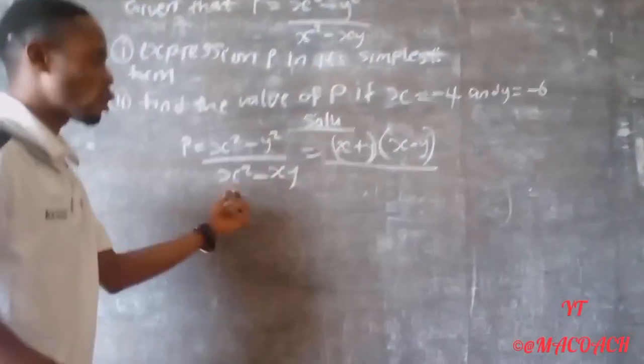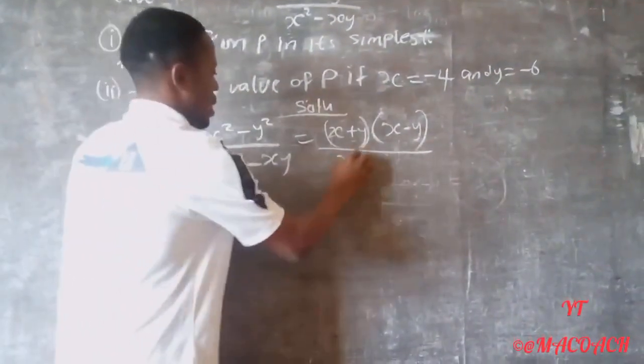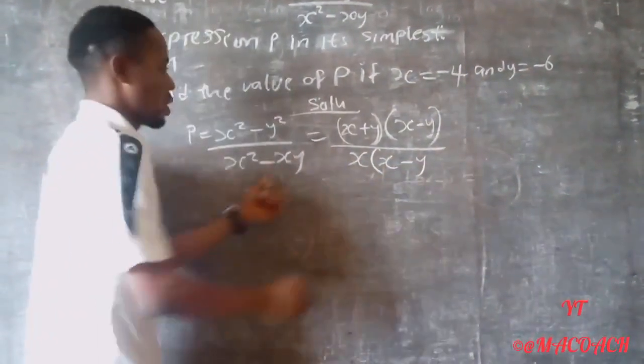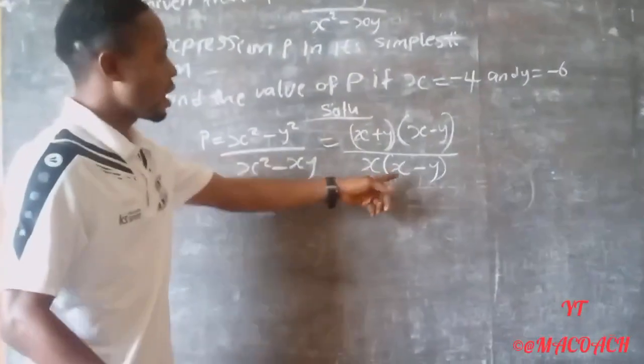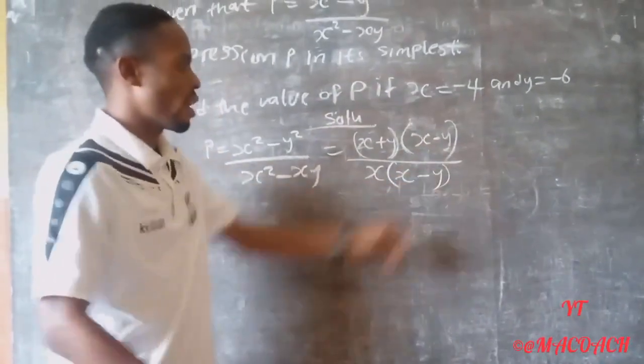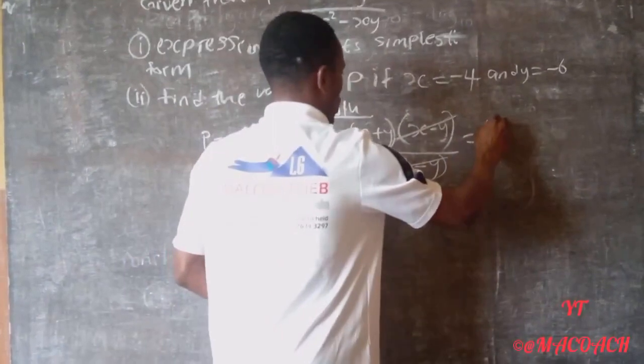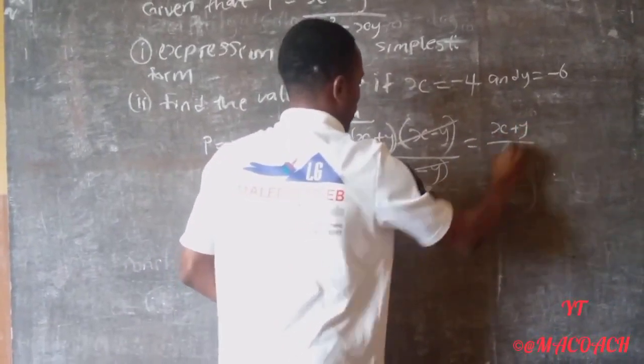If you look at the denominator, S is common to both terms. So you can factor out S. We have S times S minus Y in brackets. Now S minus Y cancels with S minus Y in the numerator. So P equals S plus Y divided by S.